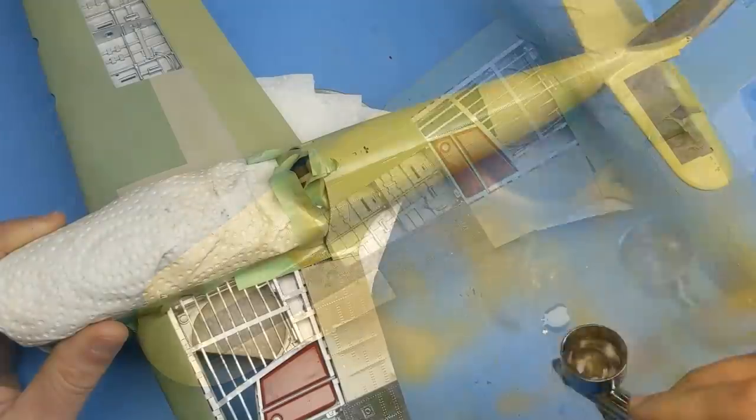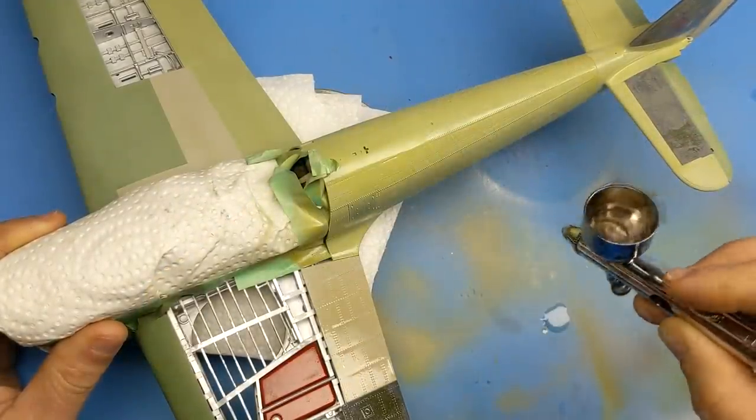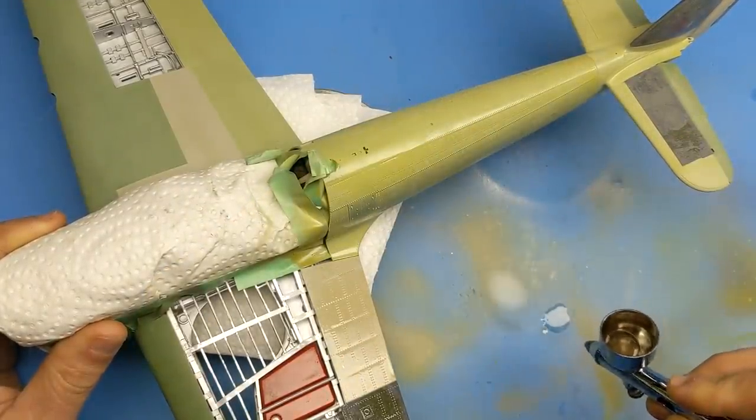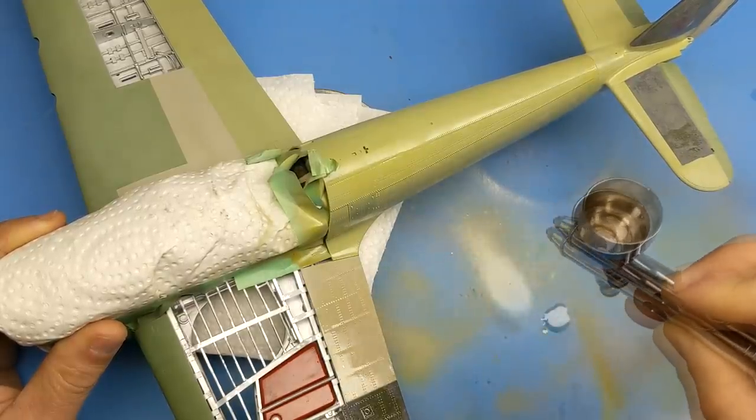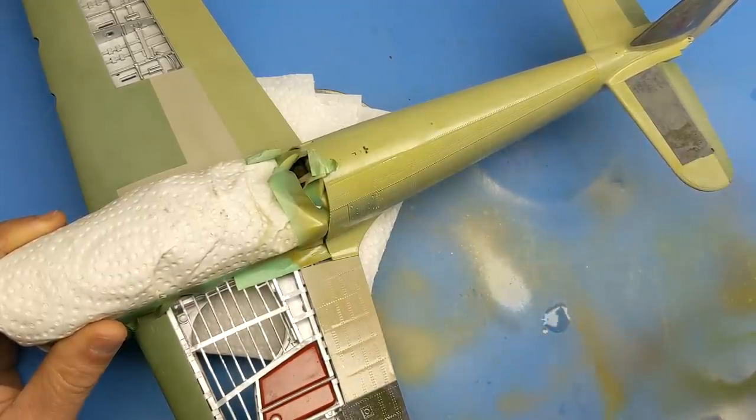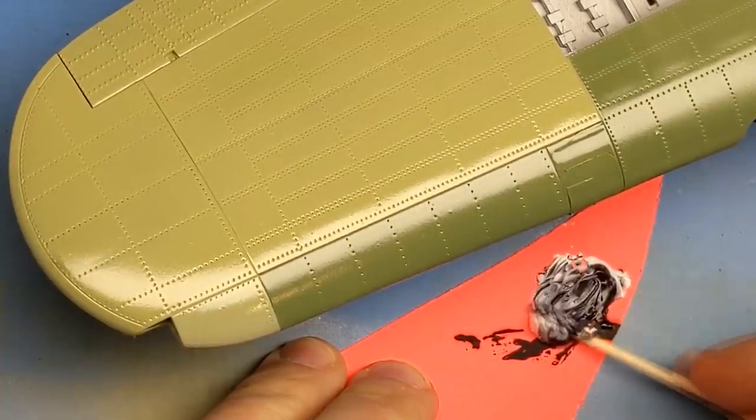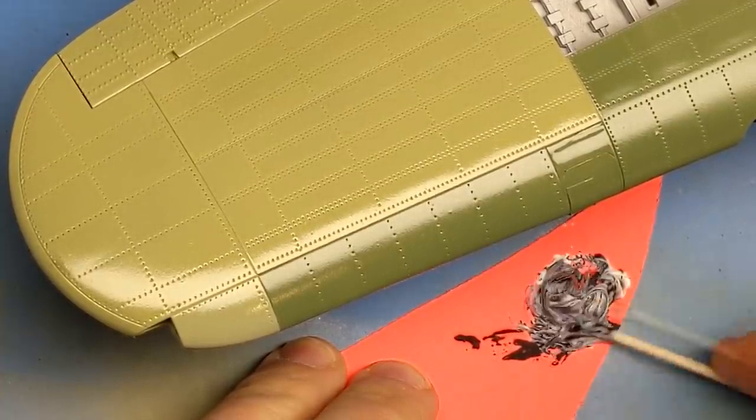The first step I always do when weathering is to seal the aircraft in at least two layers of clear lacquer gloss. What this is going to do is protect the paint underneath and also give me a safety net. So if there's any issues with the oil paints going on top of the lacquer, it can simply be wiped off without damaging anything.